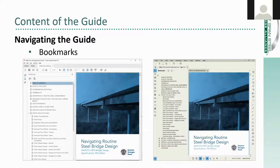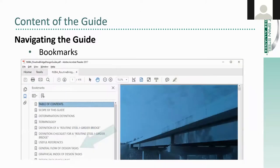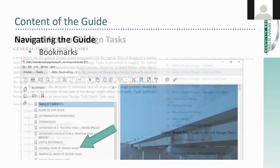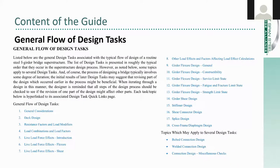There are lots of ways to navigate the guide. First, there are bookmarks which can be seen in both Adobe and Bluebeam. If you don't know where to start, you can always check out the general flow of design tasks — a list of common tasks involved in the design of a routine steel I-girder bridge, presented more or less in the order that these tasks occur in a typical design. There's a lot of back and forth involved in bridge design, so please don't take this sequence as a straitjacket. Each task is a hyperlink — if you click on any given task, it takes you to the design task quick links page for that task. For example, if you clicked on splice design, that would take you to the design task quick links page on splice design.